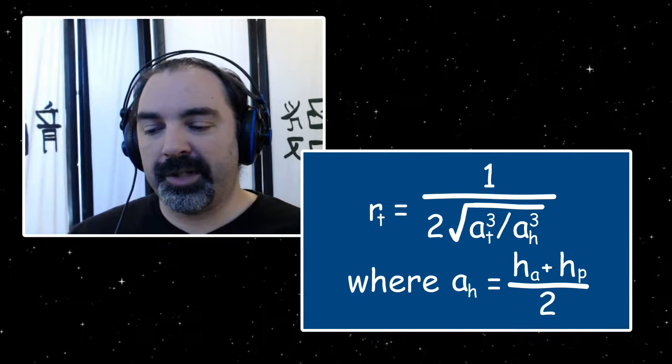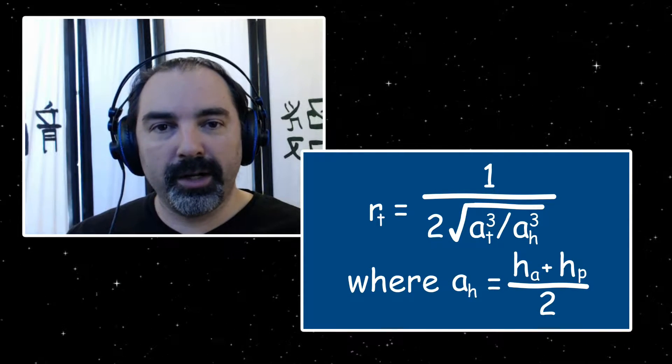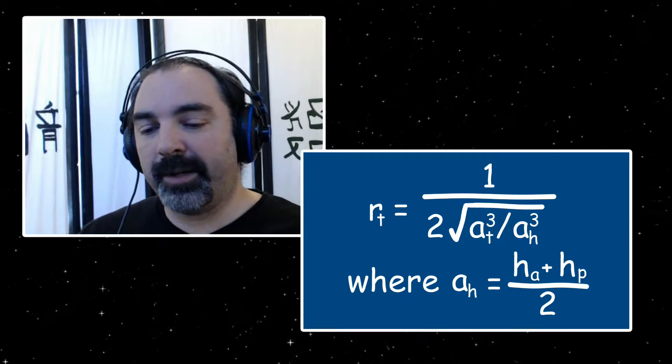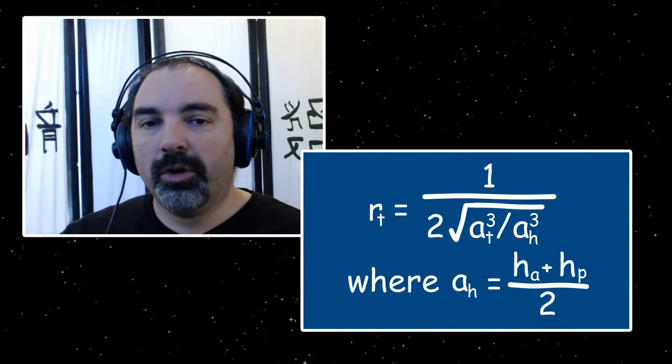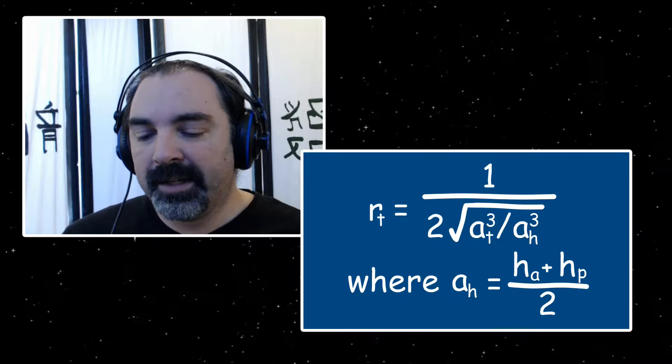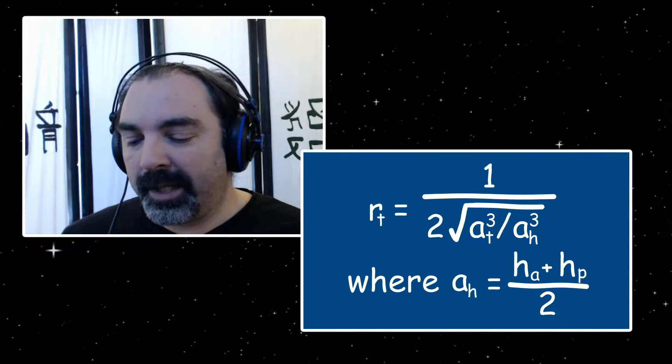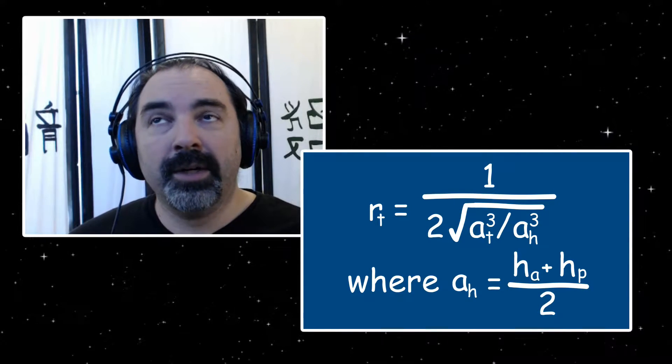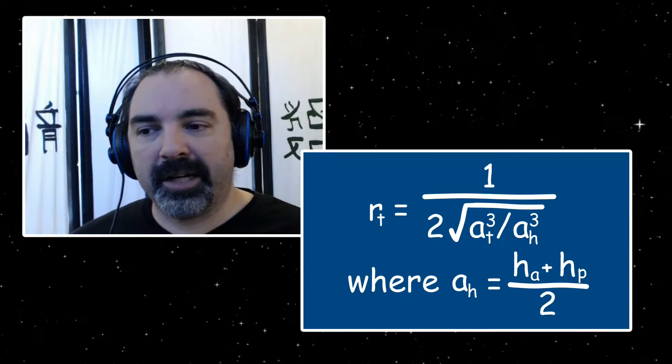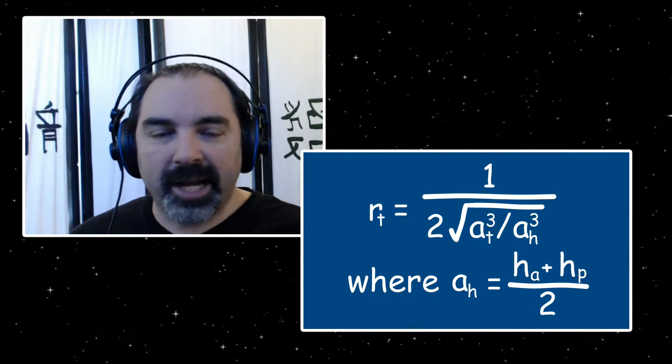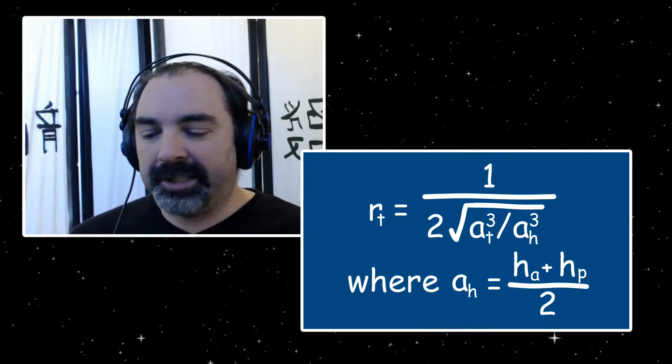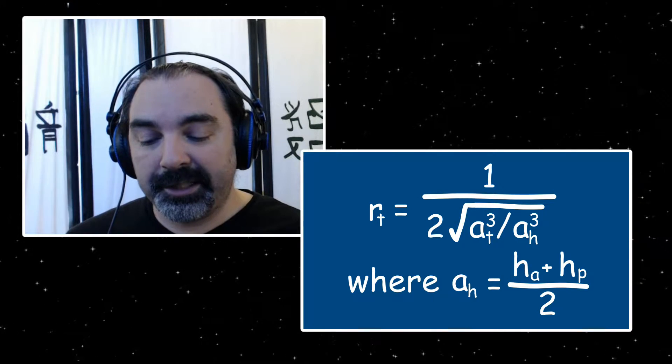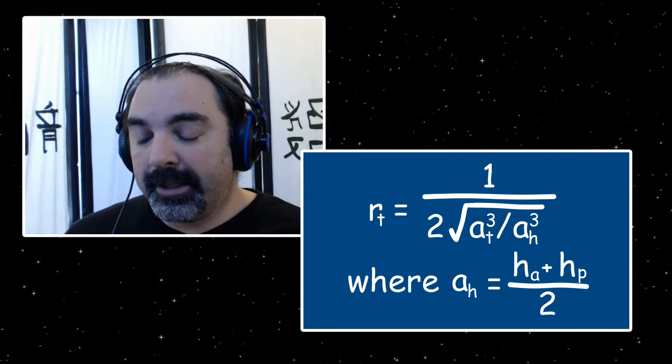I'm going to show a couple equations on the screen. The first of which is r_t equals one over two times the square root of a_t cubed divided by a_h cubed. What do all these symbols mean? Well, I'm going to start with one of them that is going to be a_h. a_h is the semi-major axis of your Hohmann transfer orbit. Now the semi-major axis is simply the average of your periapsis and your apoapsis. Add them together, divide by two, that's your semi-major axis.